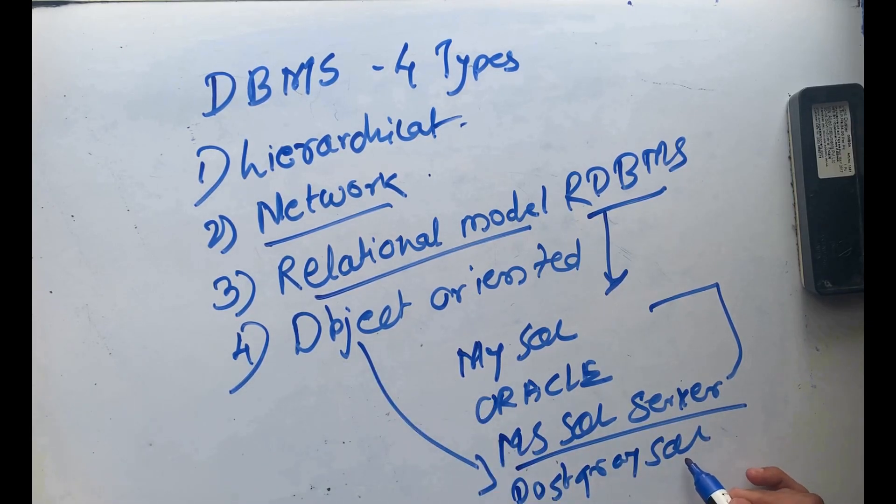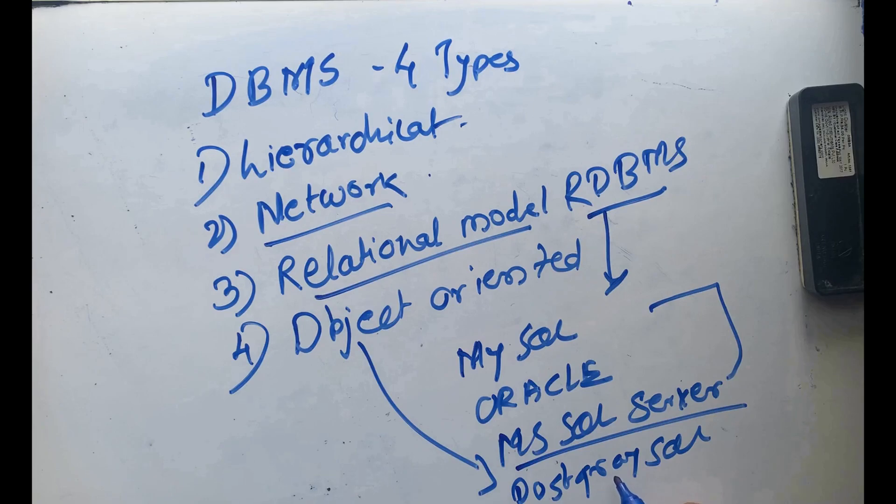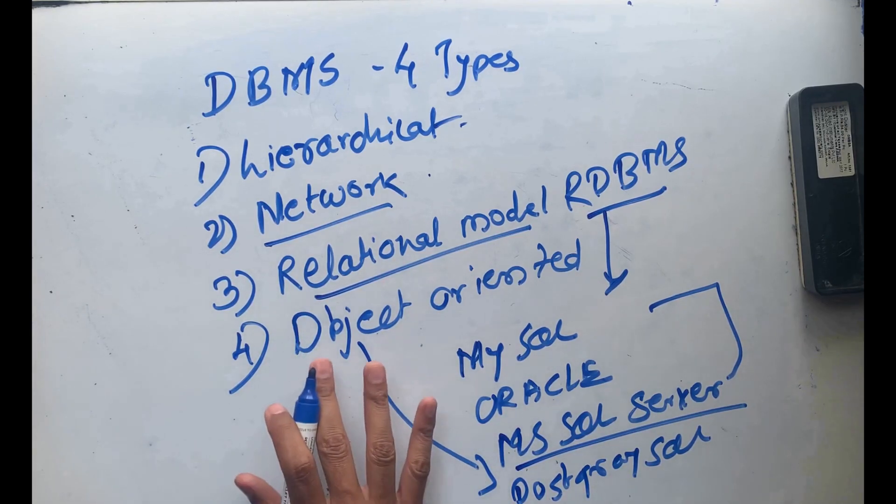Fourth one is object-oriented. Data is stored in the form of objects and classes. The structure is called classes which display the data within it. Class is a container and it has objects, and objects contain the data. That is nothing but the PostgreSQL model.